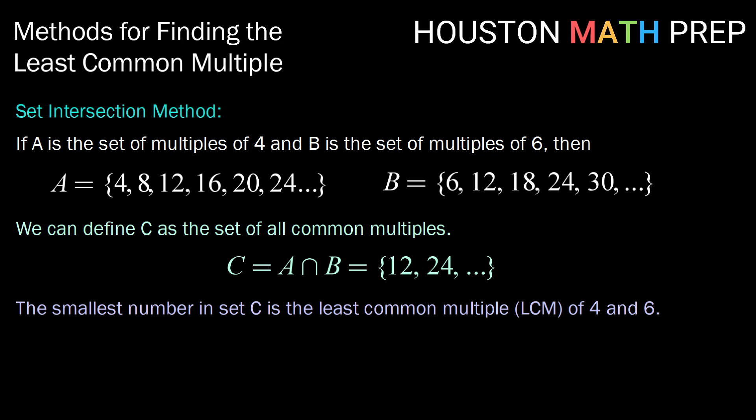The smallest number in that intersection set C is our least common multiple. In this case, our least common multiple, again for 4 and 6, is 12. Just like with the number line method, this could get rather tedious if your numbers are large. So we may want to look at alternate methods.